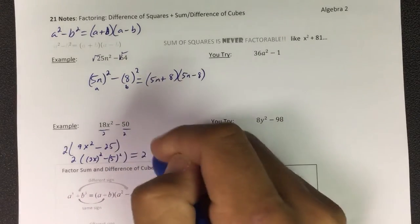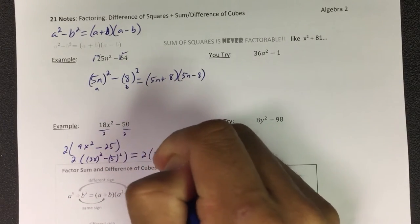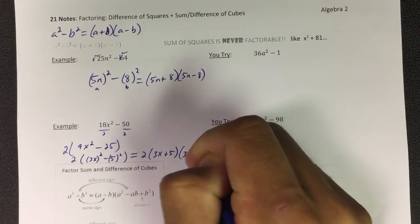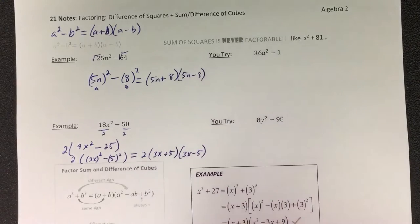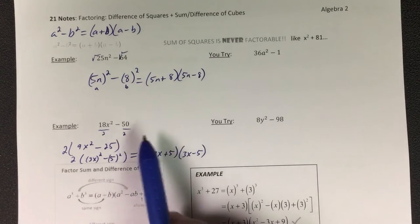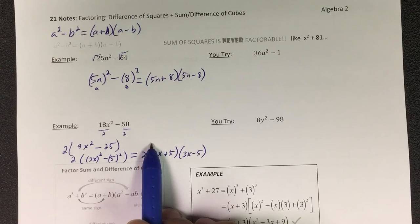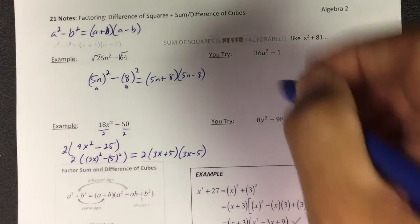So my 2 will still go in front, but now I have a, I have b, so it's 3x + 5, 3x - 5. All right, so they're showing you how they can make these problems harder. You can always do GCF and then go back and do difference of squares.